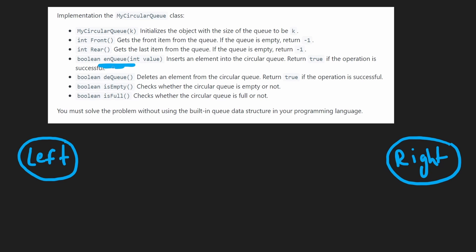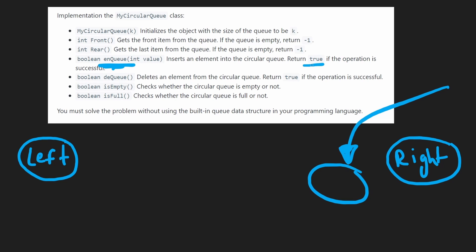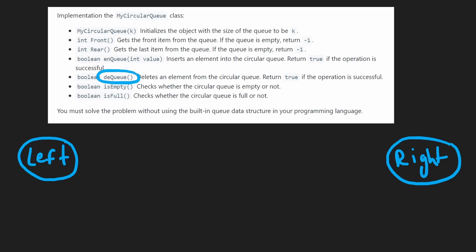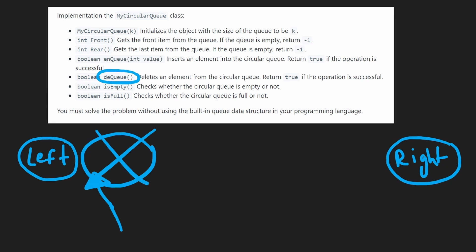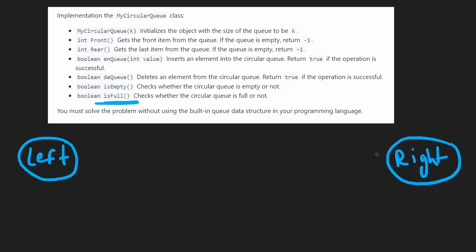EnQueue is the operation that adds a value to the end of the queue — the rear. If we have enough space to add a value, we add it and return true. If we don't have enough space, we return false. DeQueue is where we remove elements from the front of the queue. If there is an element to remove, we remove it and return true; if there are no elements, we return false. IsEmpty and isFull are helper functions we can use for the EnQueue and DeQueue operations.